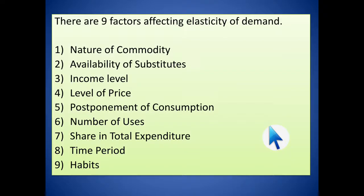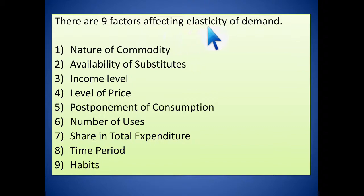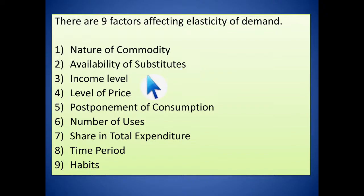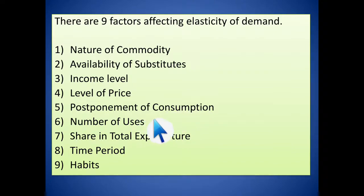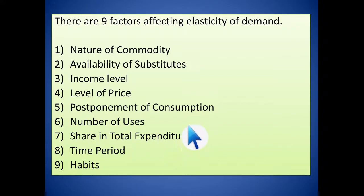Let's get started. There are nine factors that affect elasticity of demand individually. They are: nature of commodity, availability of substitutes, income level, level of price, postponement of consumption, number of users, share in total expenditure, time period, and habits. I will cover each one by one.